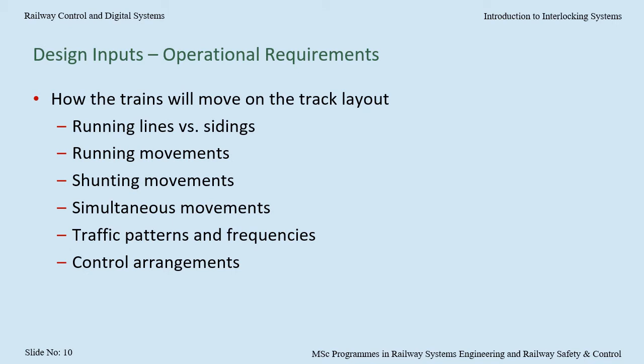From the operations people, I need to know how the trains will move on the track layout and how that's going to happen as best as we can see over the lifespan of the equipment — usually 15 to 20 years. So what's going to be running lines, what's going to be sidings, where do we want running and shunting movements to and from, which movements need to happen simultaneously, what traffic patterns and frequencies do we need, what are the control arrangements, and where are the signal boxes?